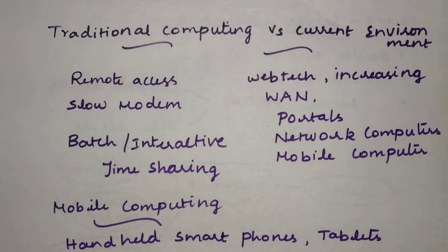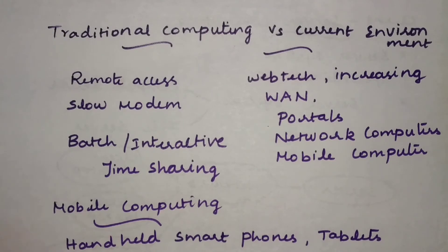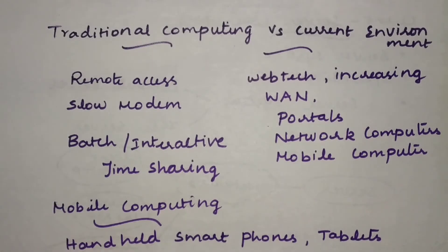Nowadays, in the current computing environment, there are many more ways to provide web access. Web technology and increasing WAN technology provide flexible ways for web access. We have portals to access the web easily with much greater speed. Network computers provide networking even for large organizations, and mobile computers can also be connected using wireless data technology.